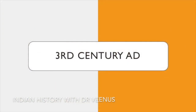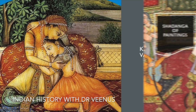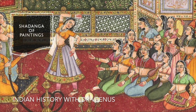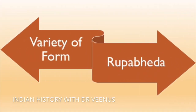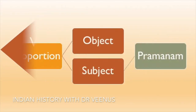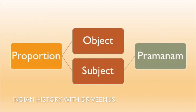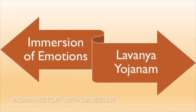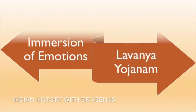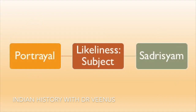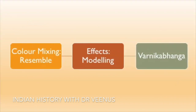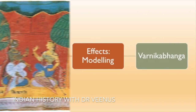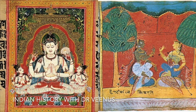In the 3rd century AD, Vatsyayan in his book Kamasutra enumerated six main principles or limbs or Shadang of paintings: Rupabhed (Variety of Form), Pramanam (Proportion of the Object), Bhava (Creation of Luster and Gleam with Colors), Lavanya Yojanam (Immersion of Emotions), Shadrishyam (Portrayal of Likeness of the Subject), and Varnikabhang (Mixing of Colors to Resemble the Effects of Modeling). There are numerous references to the art of painting in Brahmanical and Buddhist literature.